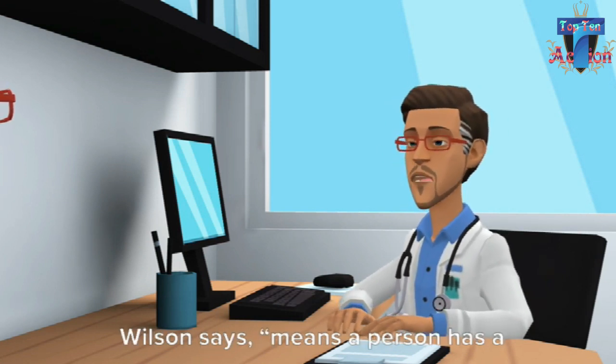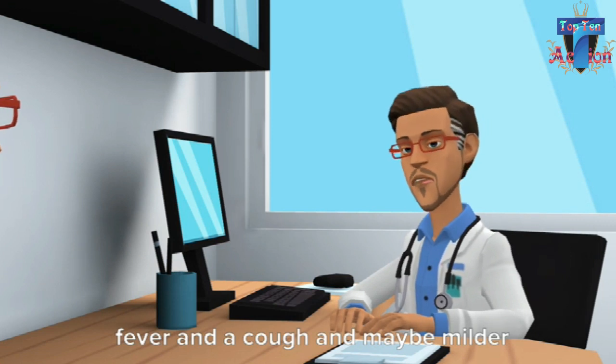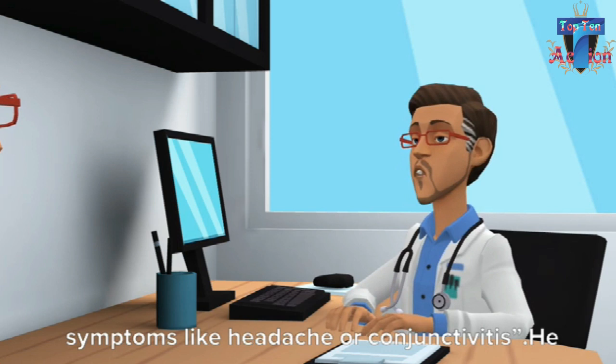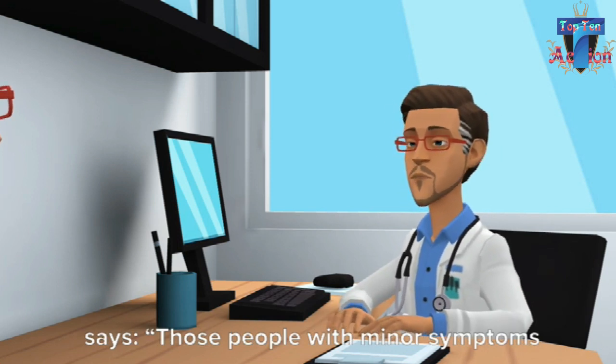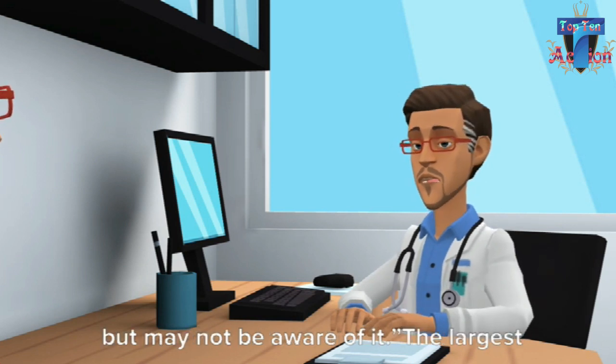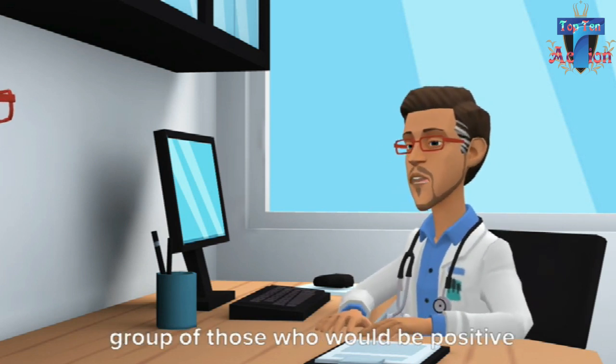Next are those who get an infection in the upper respiratory tract, which means a person has a fever and a cough and may have milder symptoms like headache or conjunctivitis. Those people with minor symptoms are still able to transmit the virus but may not be aware of it.